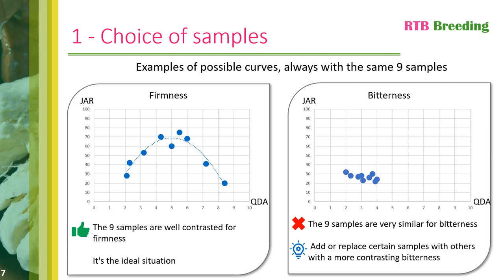The second sensory attribute studied is bitterness. For this attribute, we can see that the points representing the samples are close to each other. This means, on the one hand, that there is little contrast between the samples, since their bitterness intensity perceived in quantitative sensory analysis is between 2 and 4. On the other hand, for all the samples with similar bitterness intensity, there is consistency among consumers, since for all the samples between 20 and 30% of consumers appreciate the intensity. To increase the chances of obtaining usable results, you can add new samples whose bitterness intensity you know to provide contrast, or replace some of your samples with more contrasting ones.